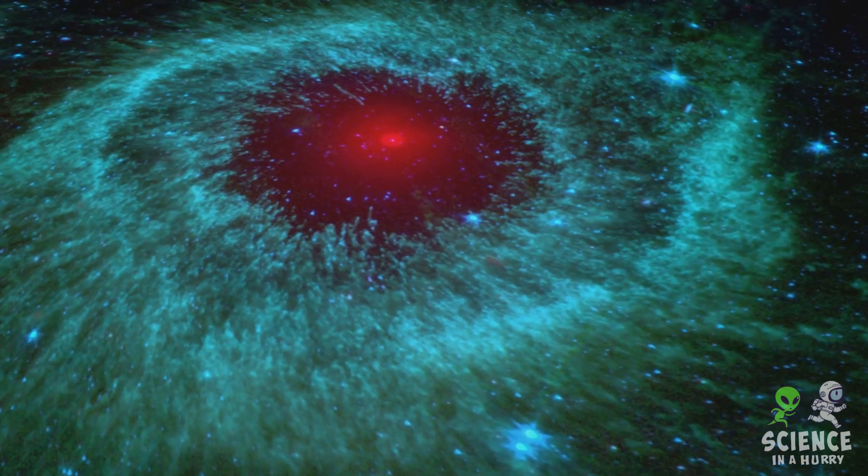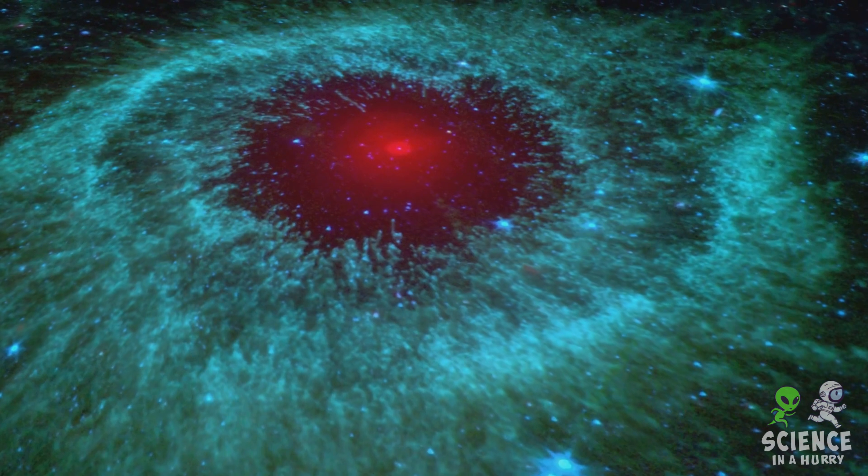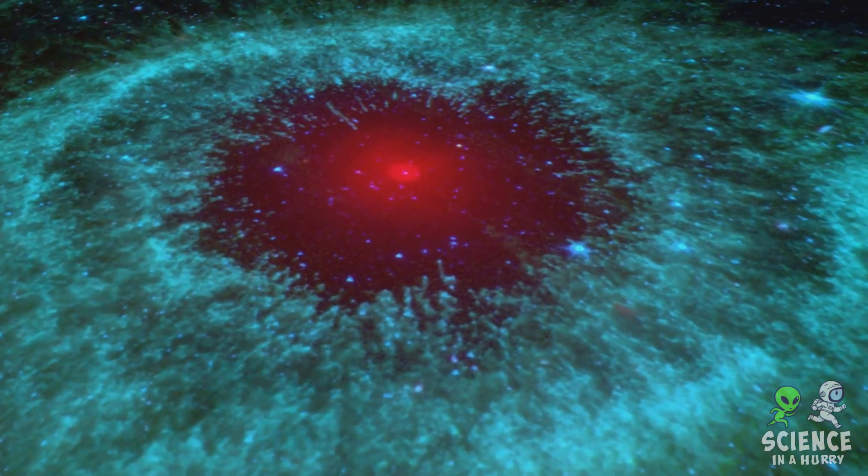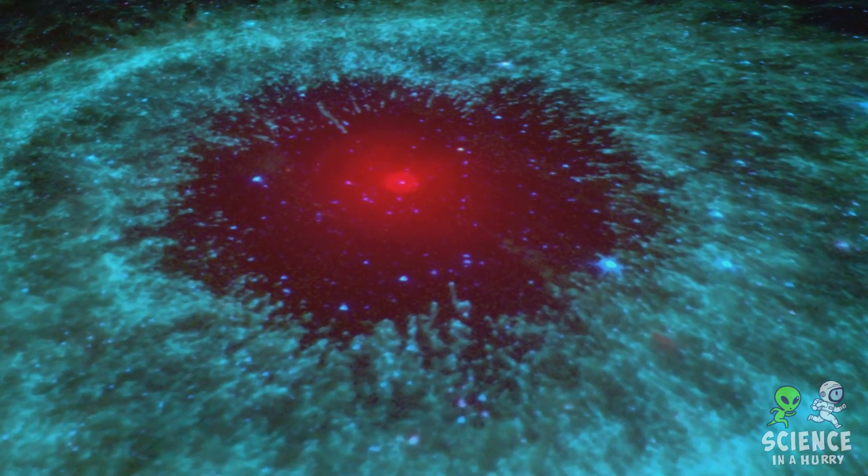The cloud forms a rotating disk. This is the conservation of angular momentum in action, the same principle that causes a spinning ice skater to speed up when pulling in their arms.